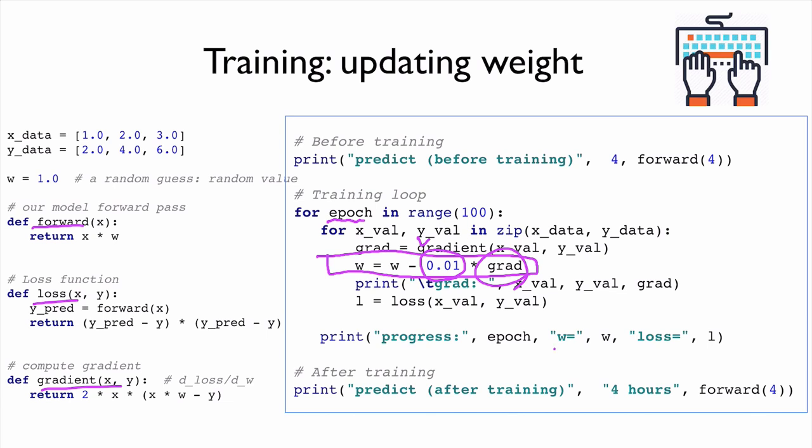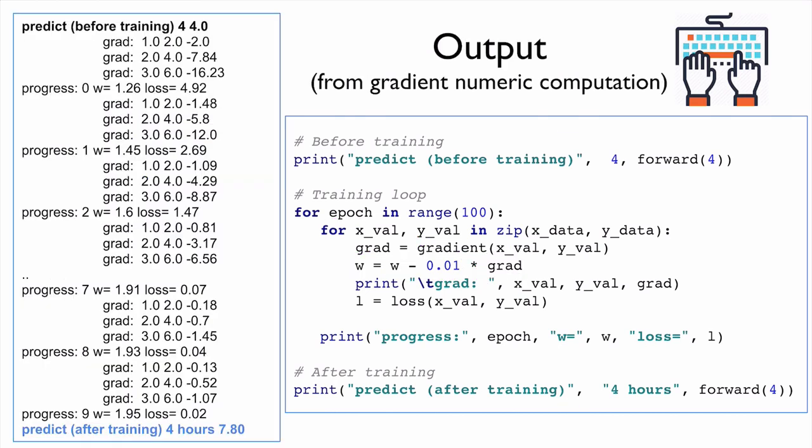And then each time we're gonna print out W and loss. And then we're gonna test our system before training and after training. This is the result.